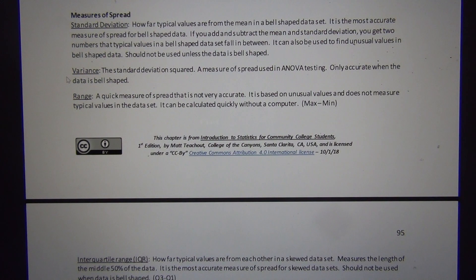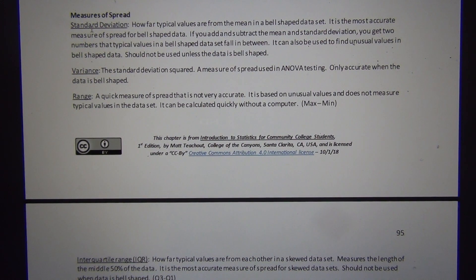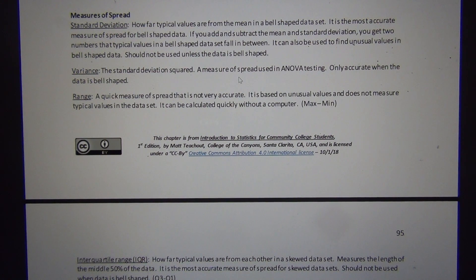So if you square the standard deviation, you get variance. Or if you take the square root of the variance, you get the standard deviation. It's basically just the standard deviation squared. It's very famous in ANOVA testing.